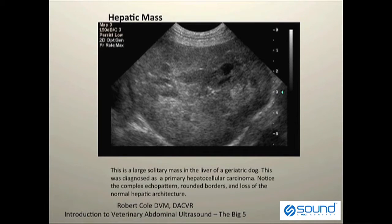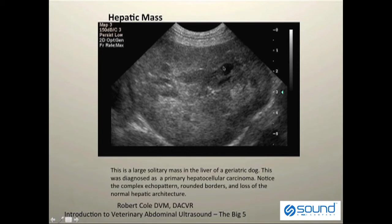Lastly, we have an example of a hepatic mass. This represents a uniformly enlarged portion of the liver that has lost all normal hepatic architecture. It has what's referred to as a complex echo pattern, as indicated by the hyperechoic and hypoechoic regions, as well as a small area that is anechoic within the central portion of that liver. Although not definitive, this is typical of a primary hepatocellular carcinoma.